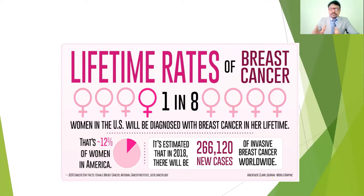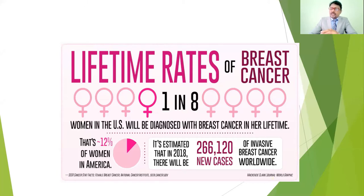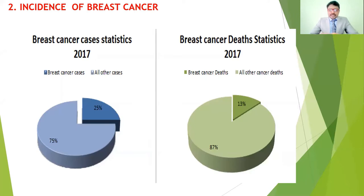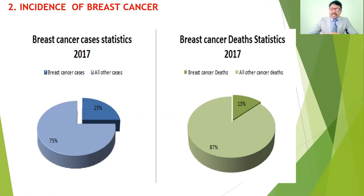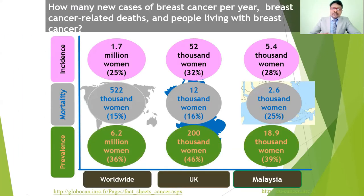Considering the normal lifespan of 70 to 80 years, at least one person in every eight members may have a chance to get breast cancer. According to 2018 statistics, around 266,120 new cases were found worldwide. According to 2017 statistics, 25 percent of all female cancers are breast cancer, and 13 percent of all cancer deaths in women are due to breast cancer.